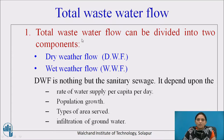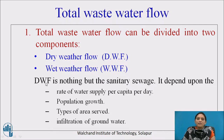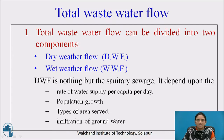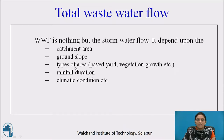Total wastewater flow can be divided into two components: dry weather flow (DWF) and wet weather flow (WWF). Dry weather flow is the sanitary sewage with no rainwater, and it depends upon rate of water supply per capita per day, population growth, type of area served, and infiltration of groundwater. Wet weather flow is the stormwater flow, and it depends upon catchment area, ground slope, types of area, rainfall duration, and climatic conditions.